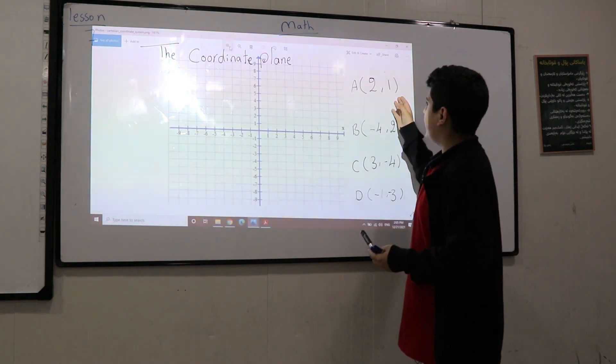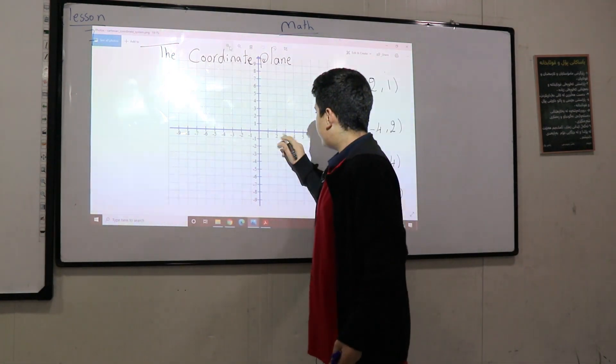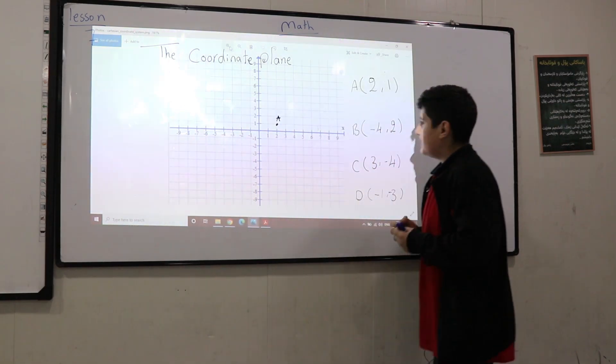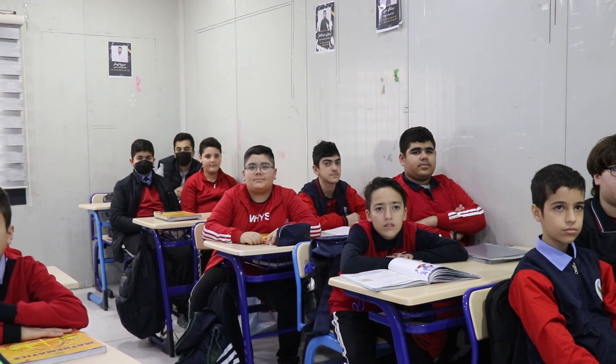So for example, point A: 2 and 1. So this is 2 and 1. And this is the intersection point which is 0.